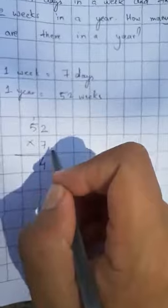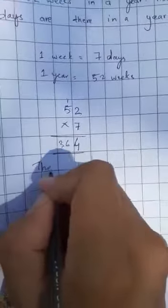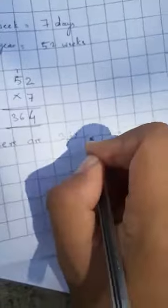4, 14, write 4 here and 1 will carry up. 7 fives are 35, plus 1 is 36. That means there are 364 days in a year.